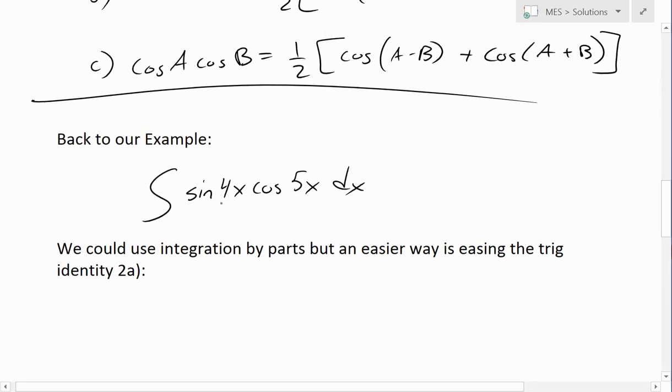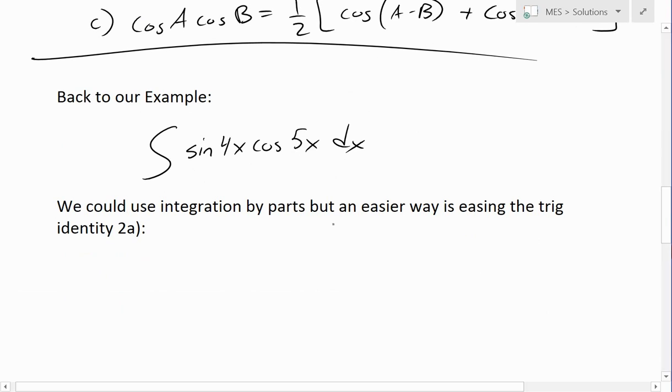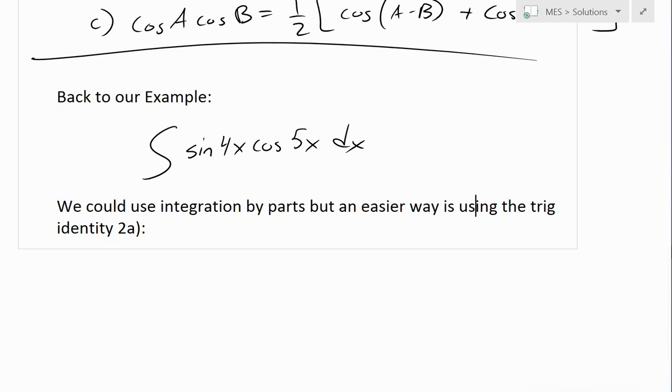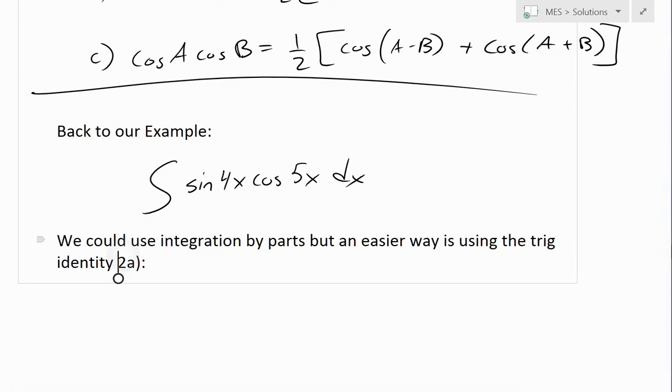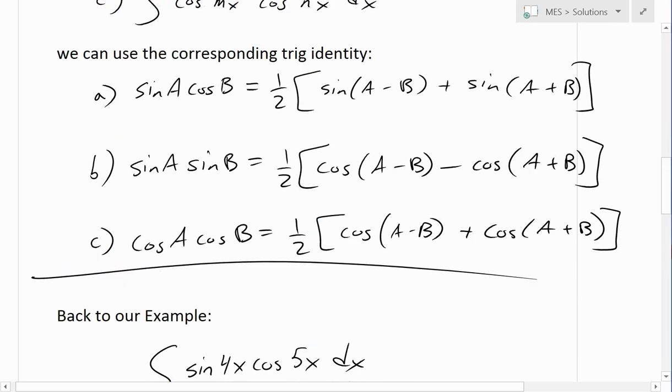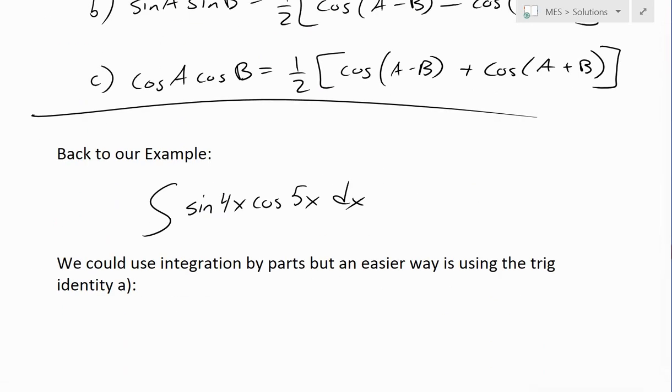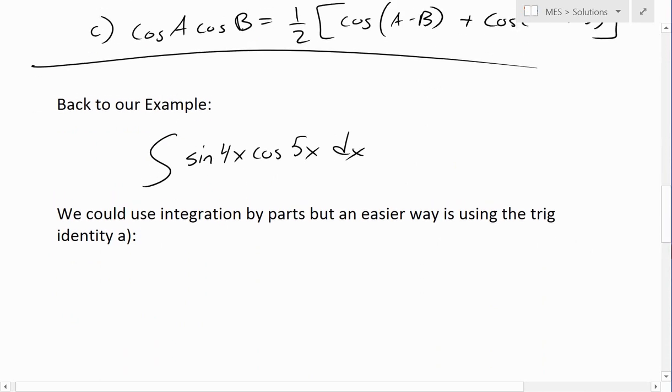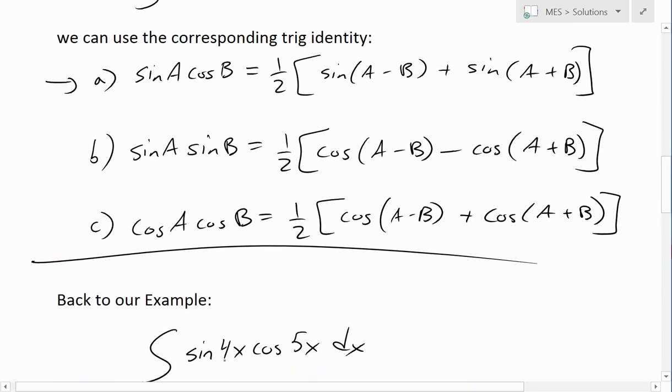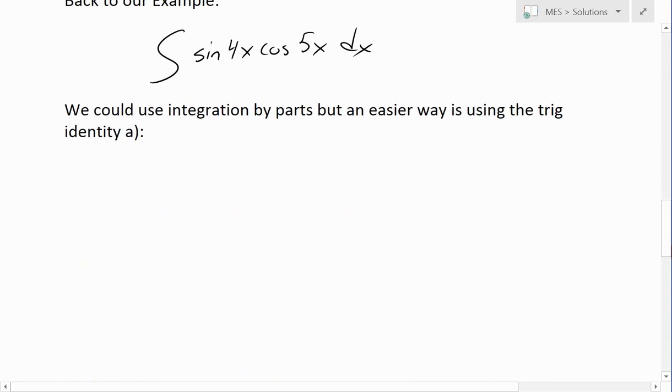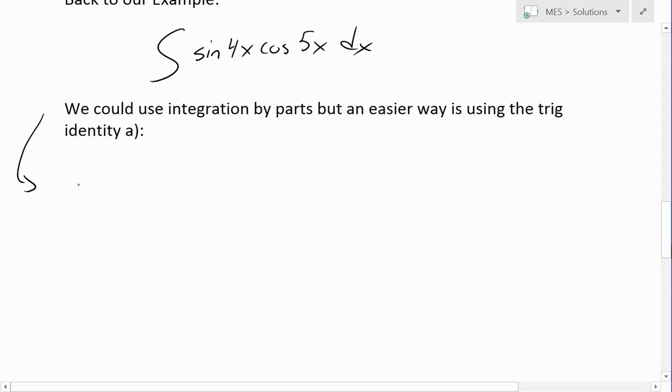Now back to our example here, sine 4x cos 5x dx. We could use integration by parts, but an easier way is using the first identity. We could use integration by parts, you can see my earlier video on that, but that's just going to complicate things. But if we were to just apply this identity, we could transform the sine cos into just dealing with sines and addition of sines.